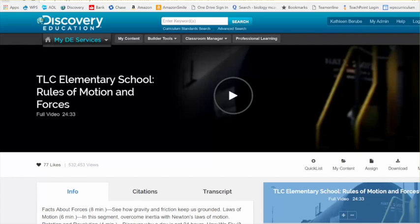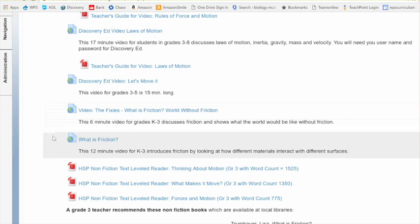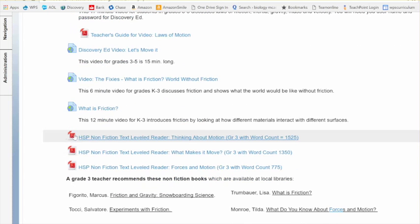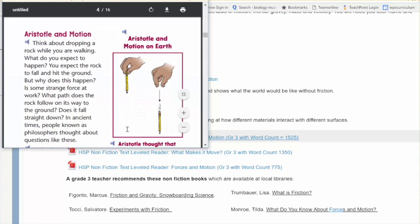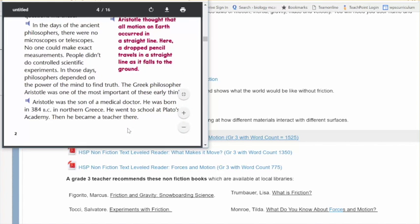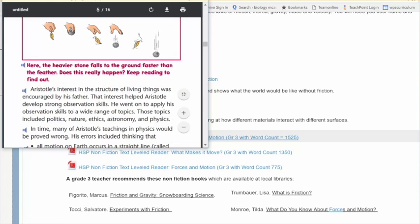So then I want to go up to my browser and click on the back arrow and get back to my Moodle site. Again, more Discovery Ed videos. And then down here, we've got some PDFs. These are the Harcourt Science Nonfiction Text Leveled Readers. These are available online to do as a whole class reading, or maybe put these on computers or iPads for your students to do small group reading.